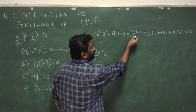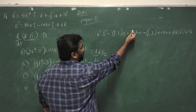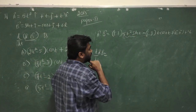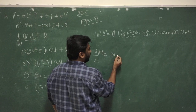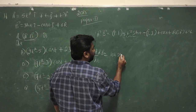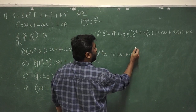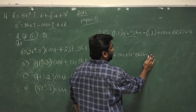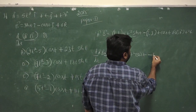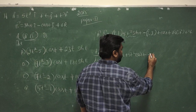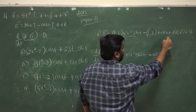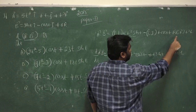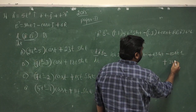We apply the product rule: keep one term constant and differentiate the other, then swap. Differentiating 5t² sin(t) gives 10t sin(t) plus 5t² cos(t). The derivative of t is 1, and for the last term we get 1 times 3t² times 6.